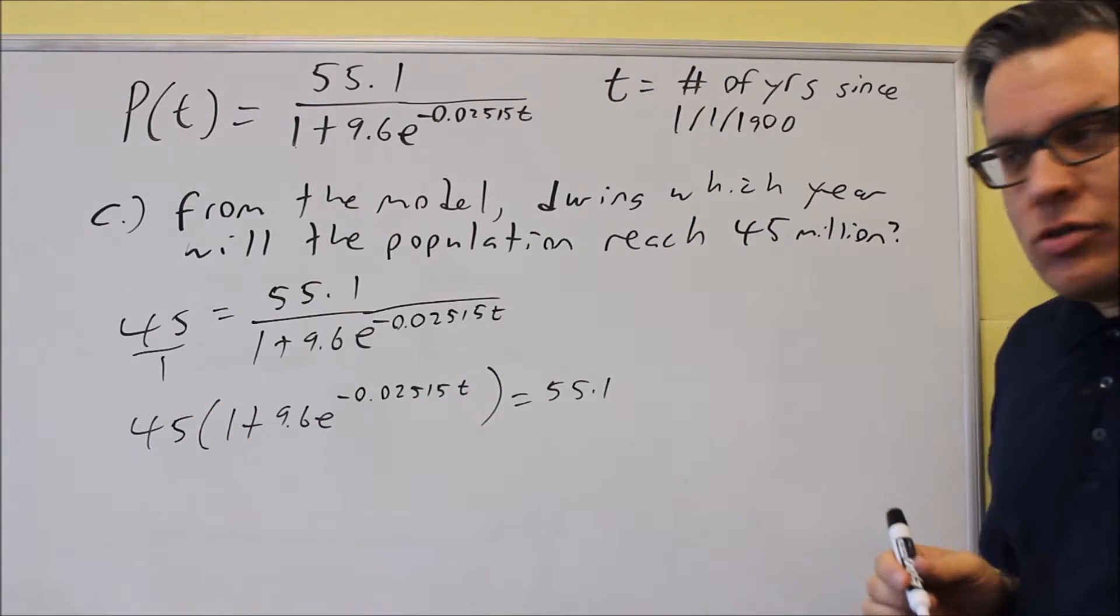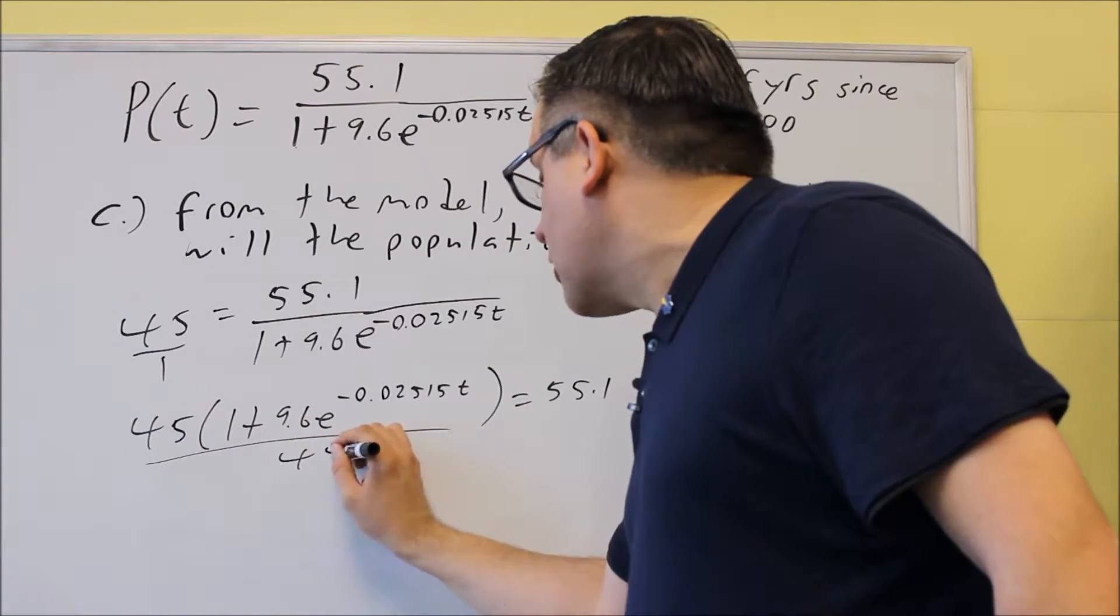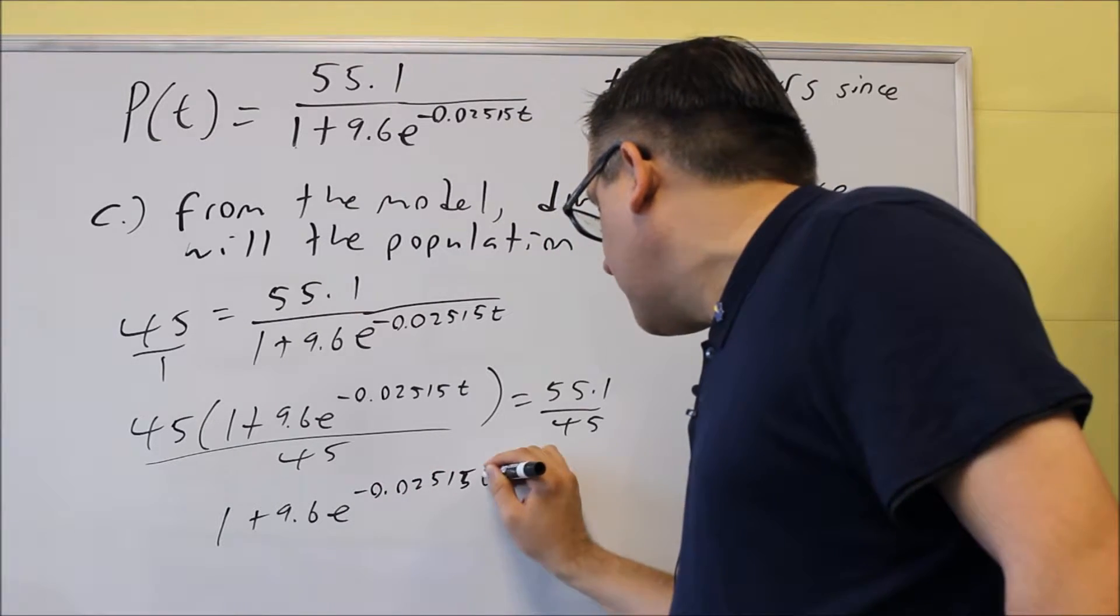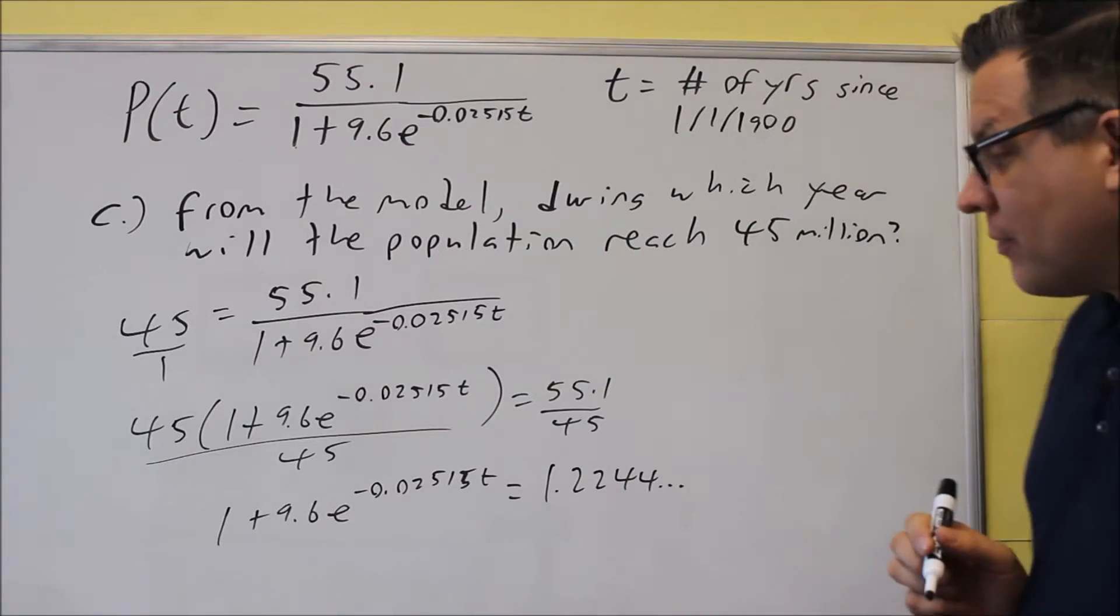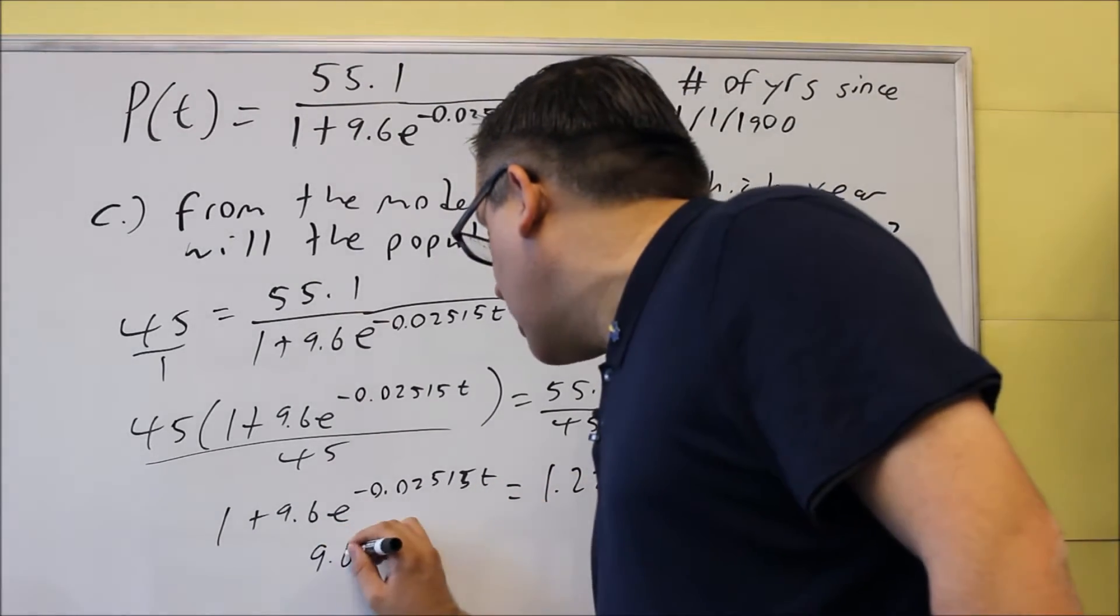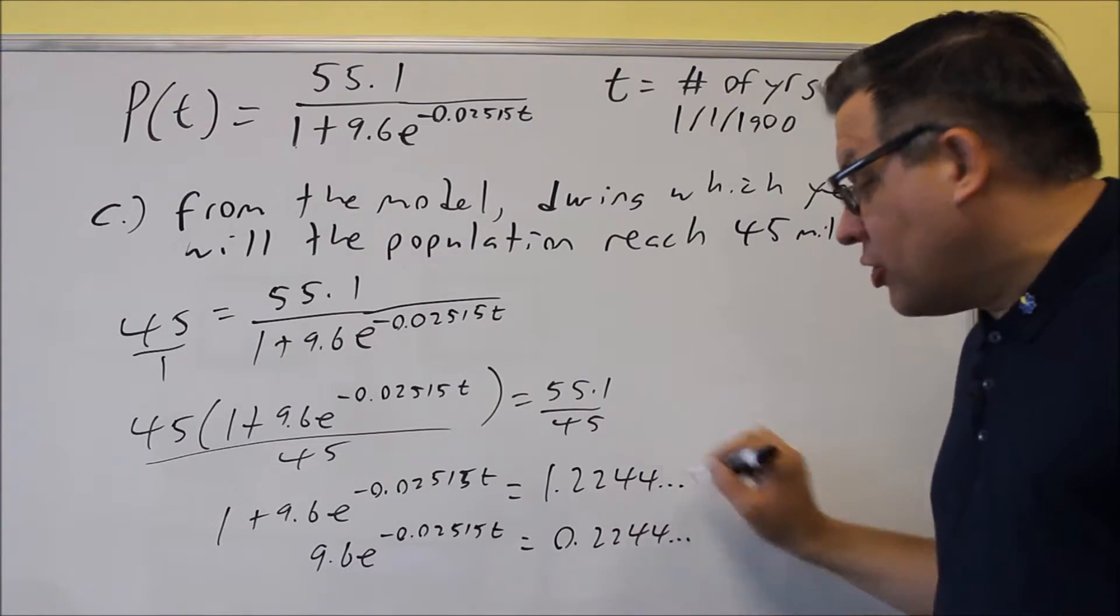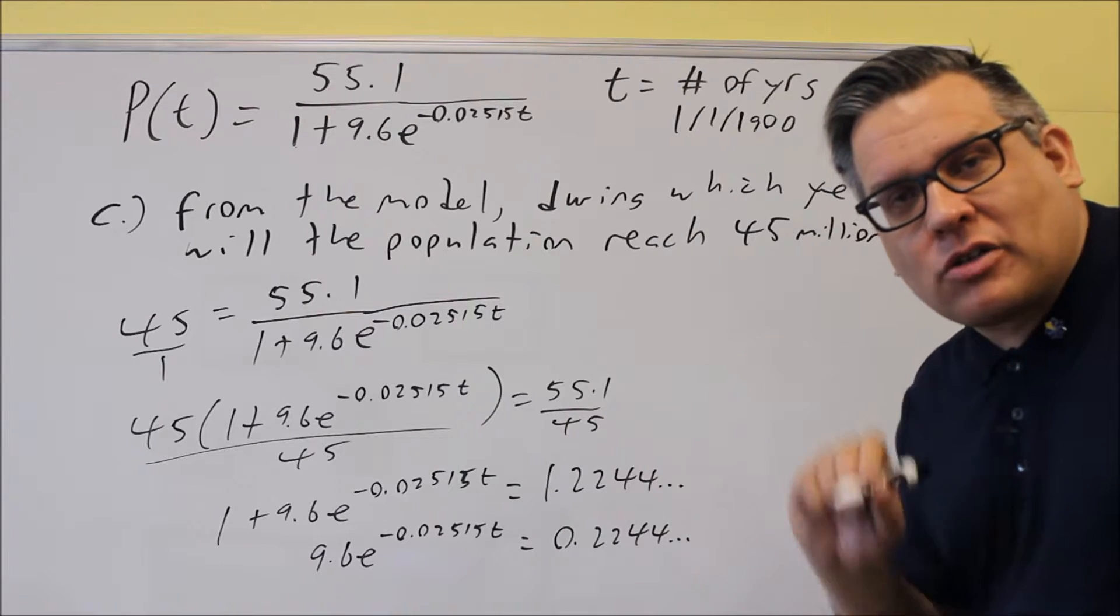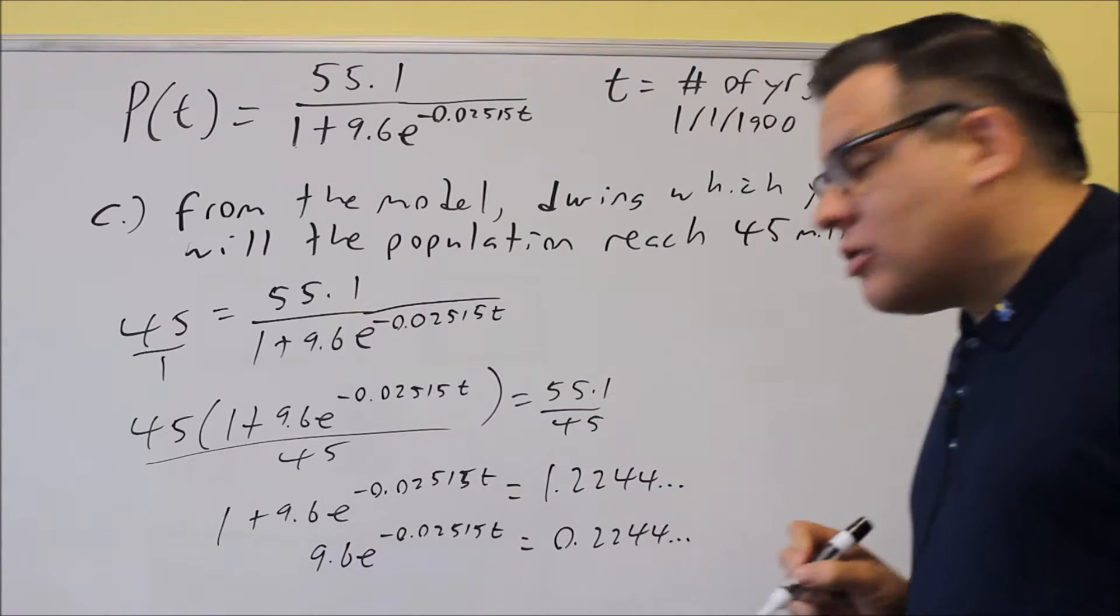Now, you could multiply the 45 out into each of those, but instead, what I'm going to do, which might make it a little bit easier, is I'm first going to start by dividing both sides by 45. So then if I divide both sides by 45 here, that'll make it a little bit easier to solve. So I have this decimal here, and then I do 55.1 divided by 45. If you do that, 1.2244 with some more decimals after that. Now, the ultimate goal is you want to isolate the part that has the e in it. So I'm going to subtract one from both sides, and I'll get 9.6e negative 0.02515T. That's going to equal 0.2244 with some more decimals. This decimal, you don't want to round it. Keep that number in your calculator because if you round it too early, you may not get the right answer, and those online programs are picky as far as the answers that you put in. So we're going to go ahead and keep it with all the decimals there.